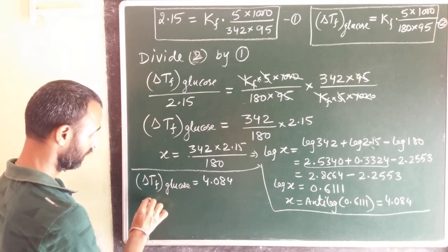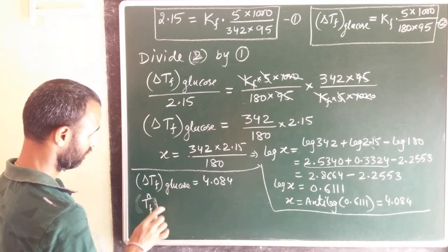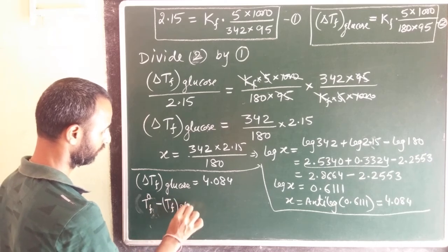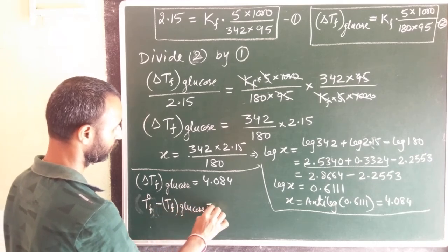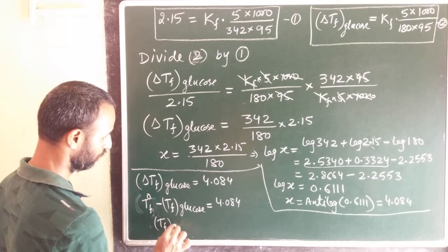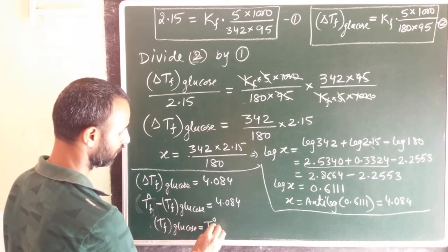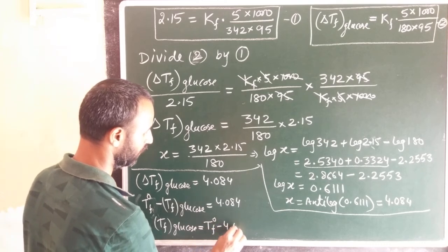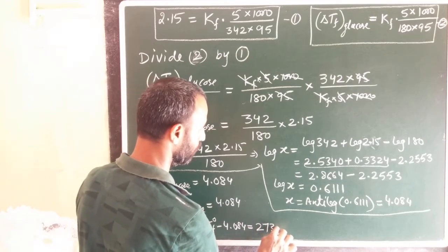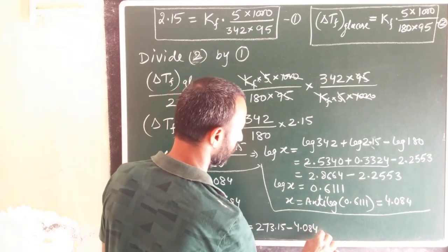Then, you know, Tf - T0f minus Tf of glucose is equal to 4.084. So from here, Tf of glucose is equal to T0f minus 4.084.